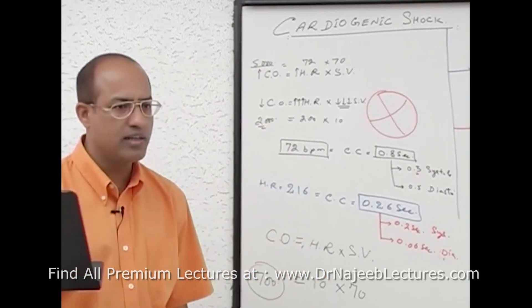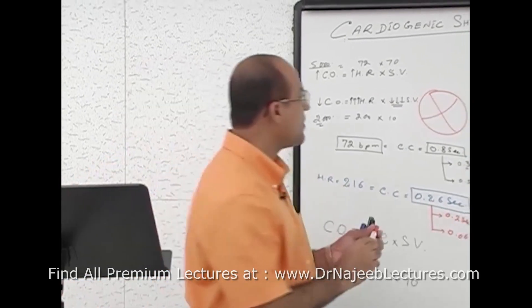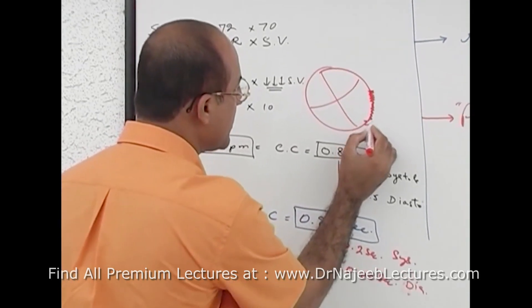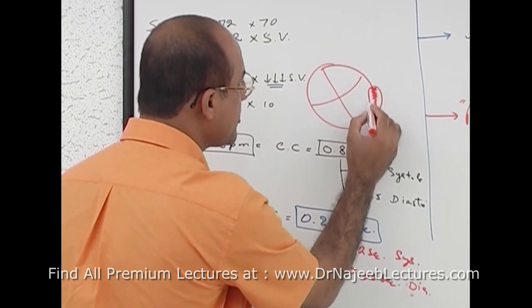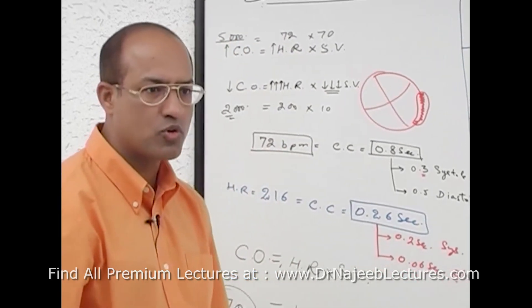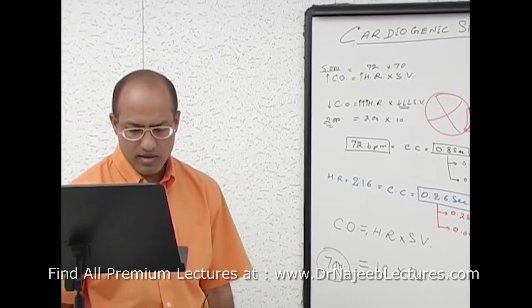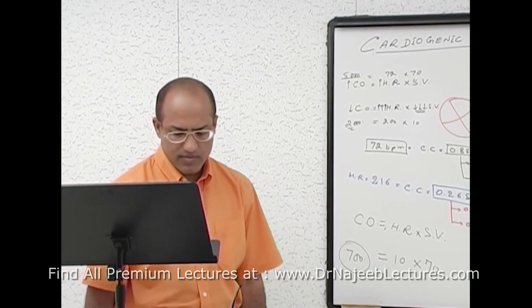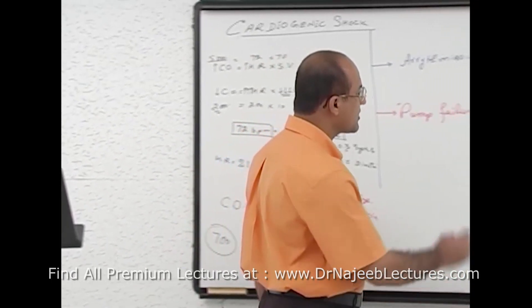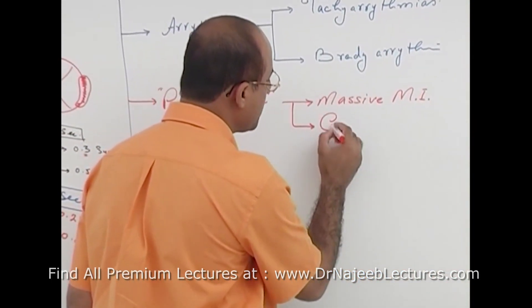In massive myocardial infarction, a large area of myocardium is infarcted and not contracting. The heart cannot maintain cardiac output because stroke volume will be dangerously low, and again the patient goes into cardiogenic shock. Pump failure may be due to massive myocardial infarction, or sometimes due to severe cardiomyopathies.